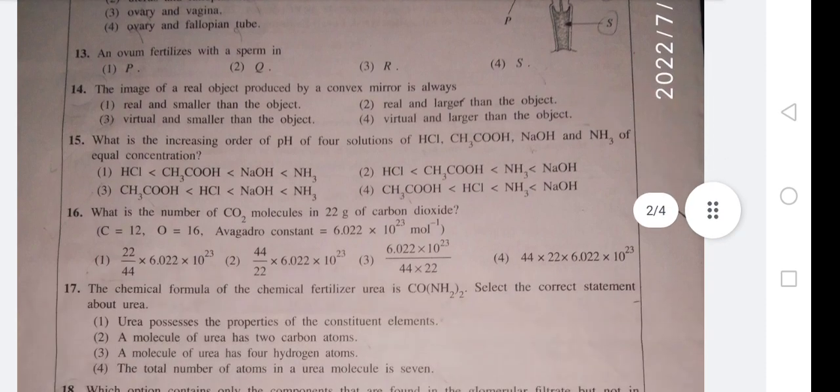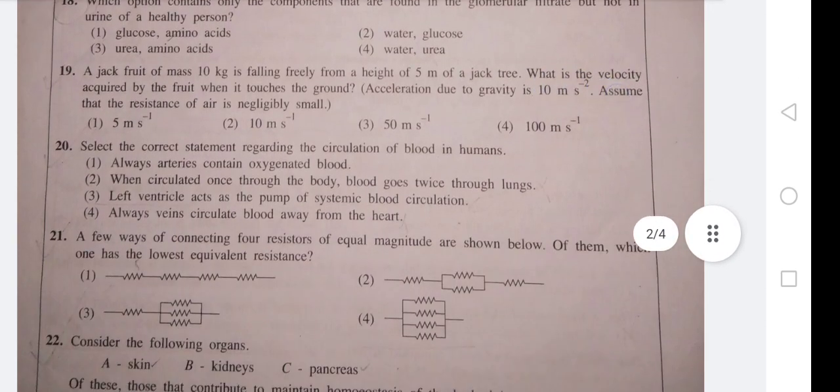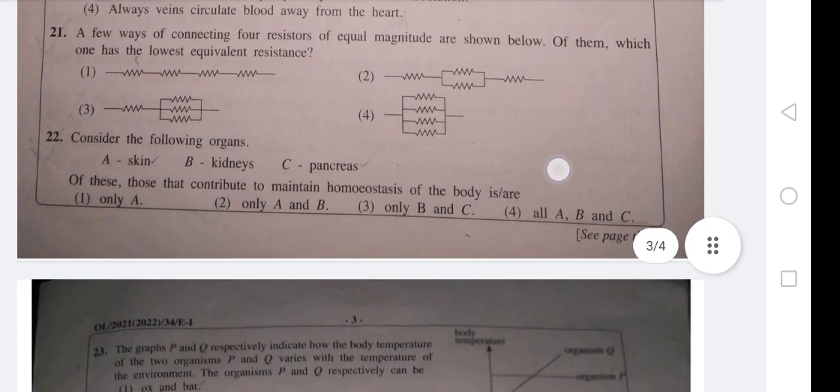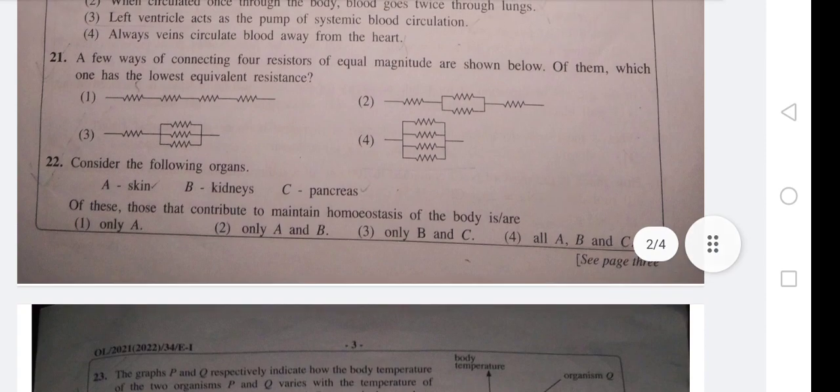Question 21: A few ways of connecting four resistors of equal magnitude are shown below. Of them, which one has the lowest equivalent resistance? Equivalent resistance can be calculated in series as well as in parallel circuits. The first one is a series. Here all the values of the resistance will be added, so it's not the low one.